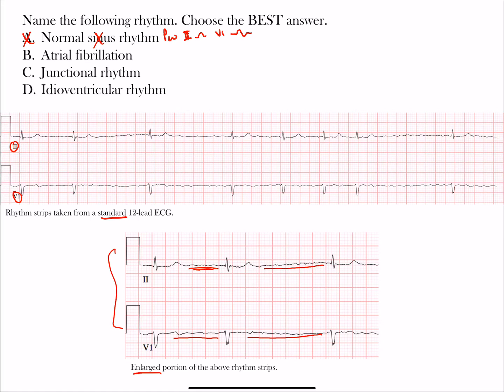Of the remaining three choices, none require P waves. In atrial fibrillation, you have no P waves, and you may see fibrillatory or flutter waves. AFib also produces an irregularly irregular rhythm. The rate in normal AFib is between 60 and 100 beats per minute, though that's not the key distinguishing factor here.